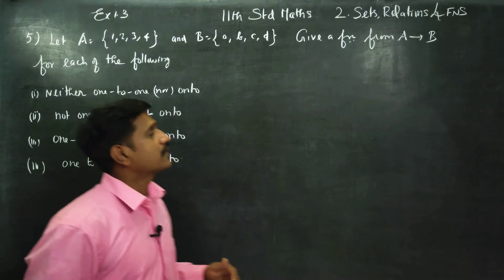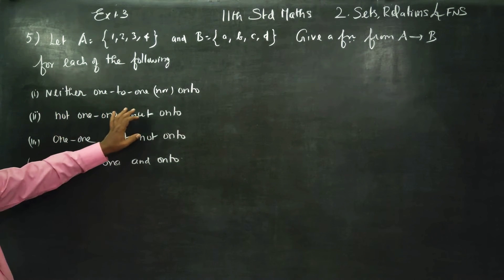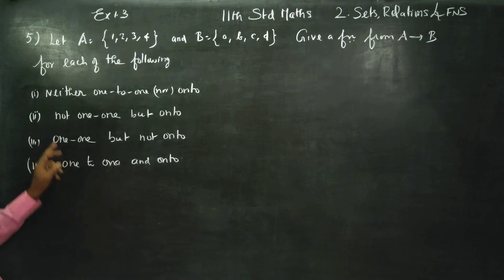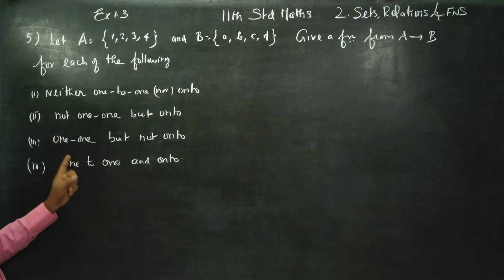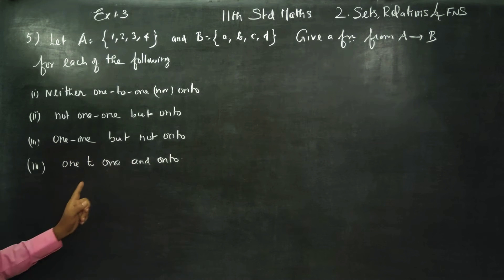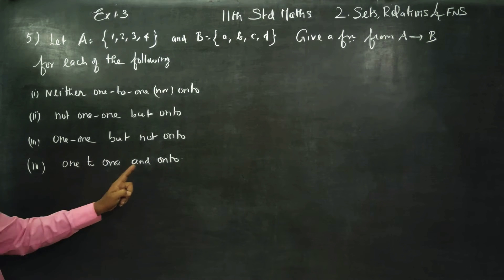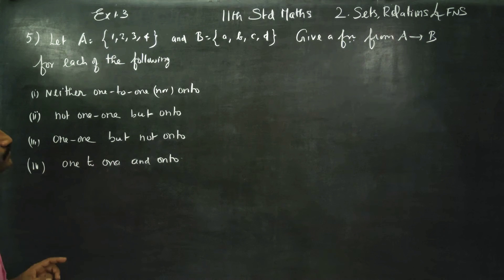We need to find conditions for: neither one-one nor onto, not one-one but onto, one-one but not onto, and one-one and onto.